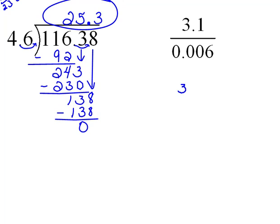This would be 3.1 divided by 0.006. Now, I didn't put the zero in front of the decimal. You can if you want. It doesn't really mean anything.